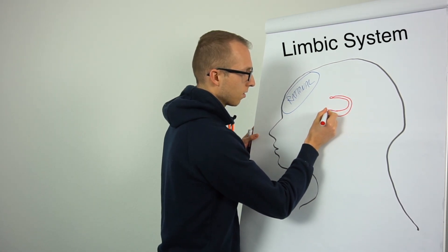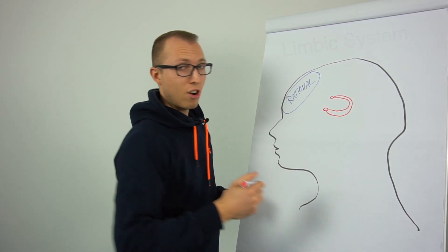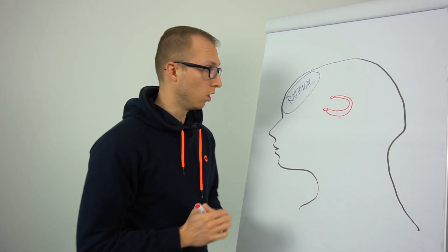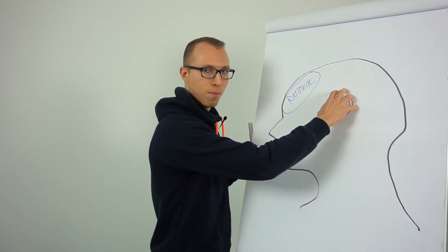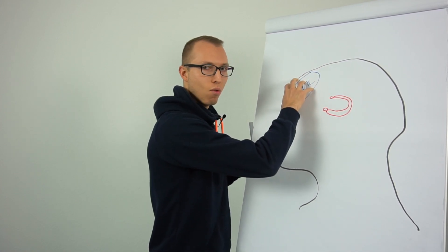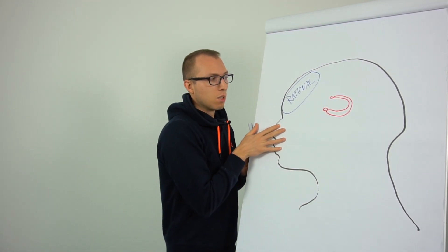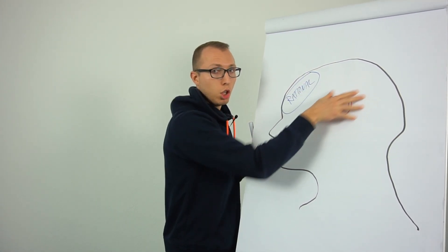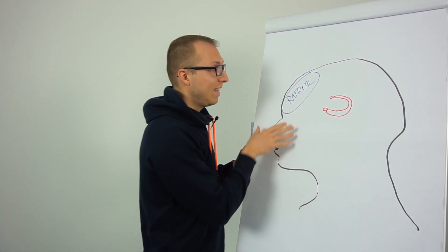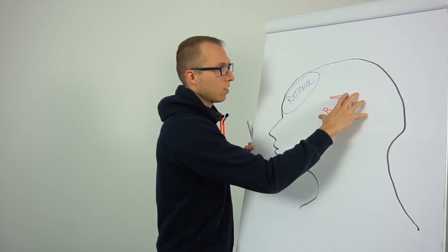Now the thing is when we get very angry, very emotional, this part is highly active and it overrides the rational thinking system and even blood is more flowing in this direction. Use it or lose it. It goes where we need it and if you're highly emotional it goes more in this direction. We're not capable to be very rational in the very moment.